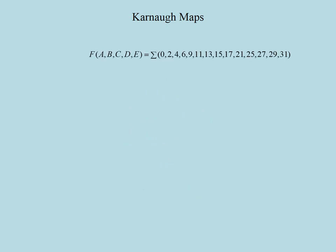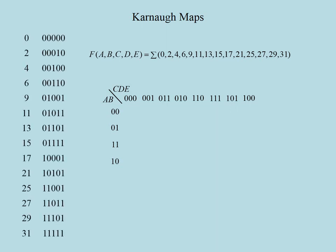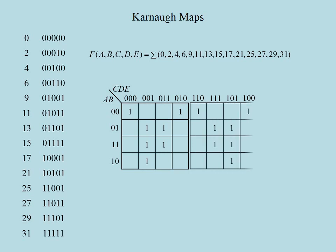The next challenge is a 5-variable map. Consider this function which is specified as a sum of min terms. Here we need a map of 32 cells, organized as 4-by-8. The 8 columns correspond to the different combinations of literals of C, D, and E, ordered according to a 3-bit gray code. As the number of variables increases, I would recommend noting the min term numbers in binary so that they can be checked in the map easily. Let me mark the rows that contain the min terms of unprimed A and unprimed B, as well as the columns of C, D, and E.